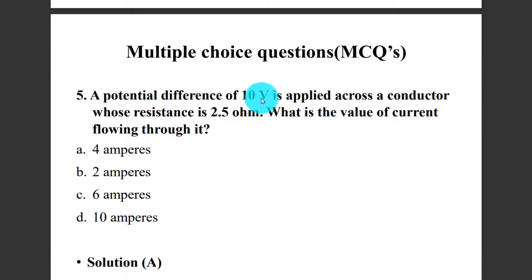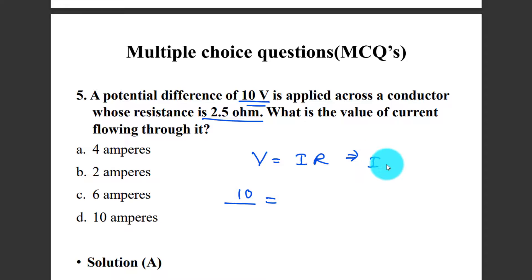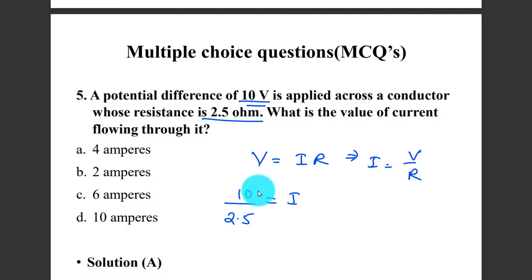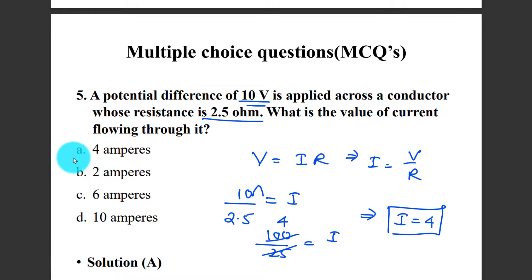Problem: A potential difference of 10 volts is applied across a conductor whose resistance is 2.5 ohms. What is the value of current? Using V equals IR, I equals V divided by R equals 10 divided by 2.5, which equals 100 divided by 25, which equals 4. Therefore, I equals 4 amperes.